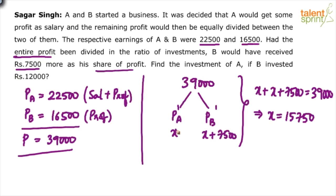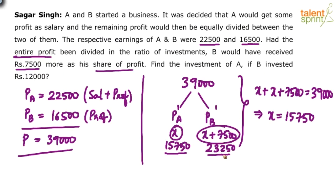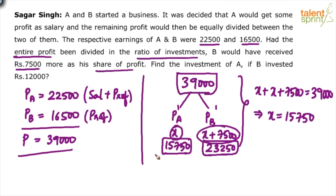So profit of A (Pa dash) in the second case is 15,750, and profit of B (Pb dash) is 15,750 + 7,500 = 23,250. The entire profit of 39,000 has been divided according to their investments. Therefore Pa dash / Pb dash equals investment of A / investment of B — that is, 15,750 / 23,250 = investment of A / investment of B.